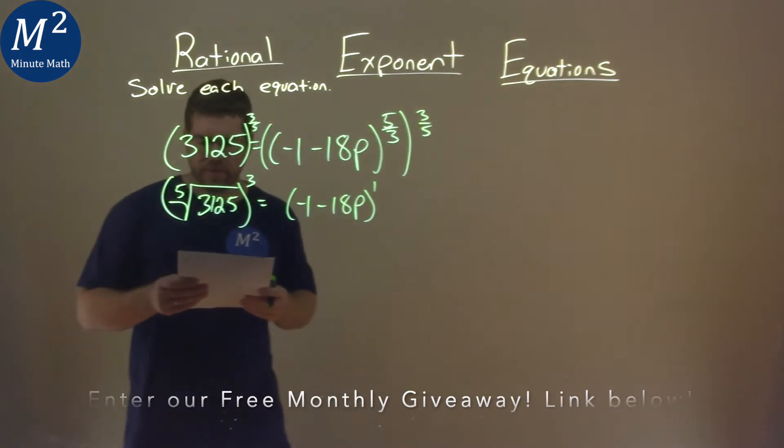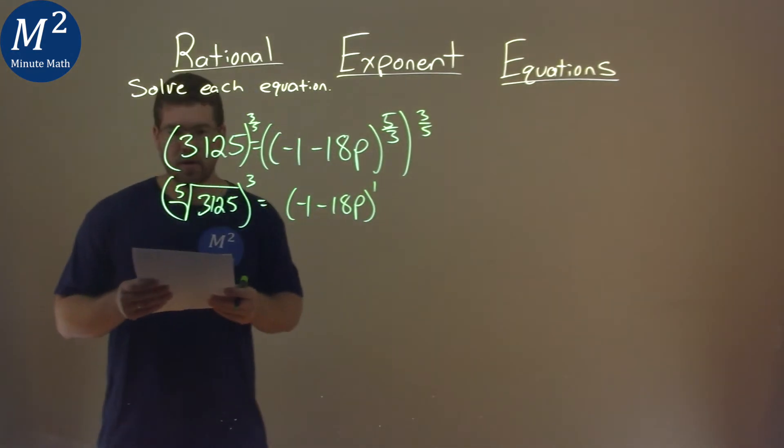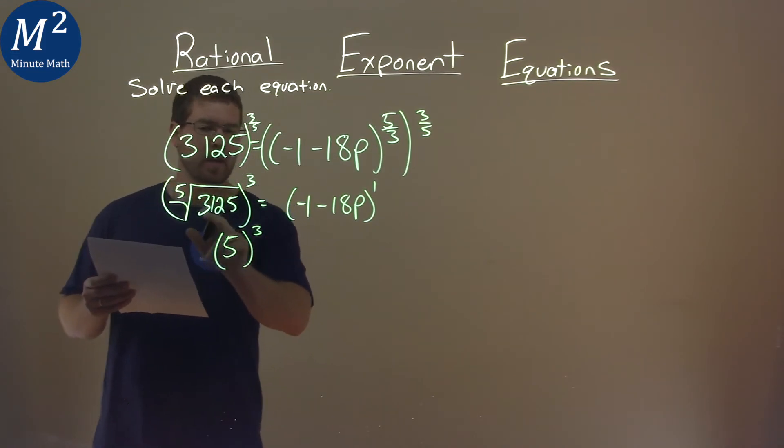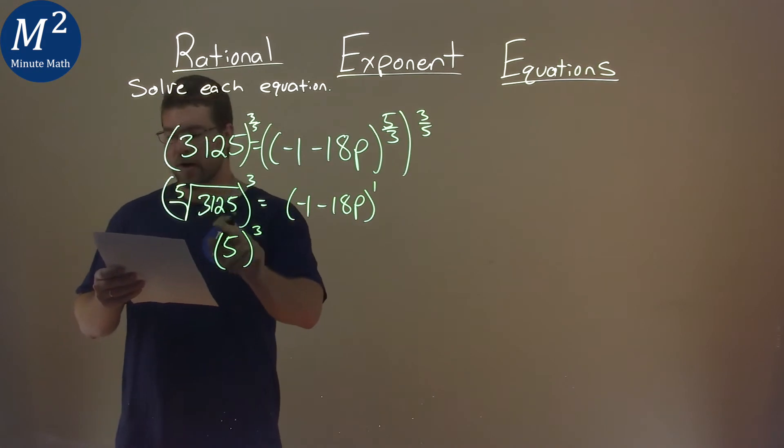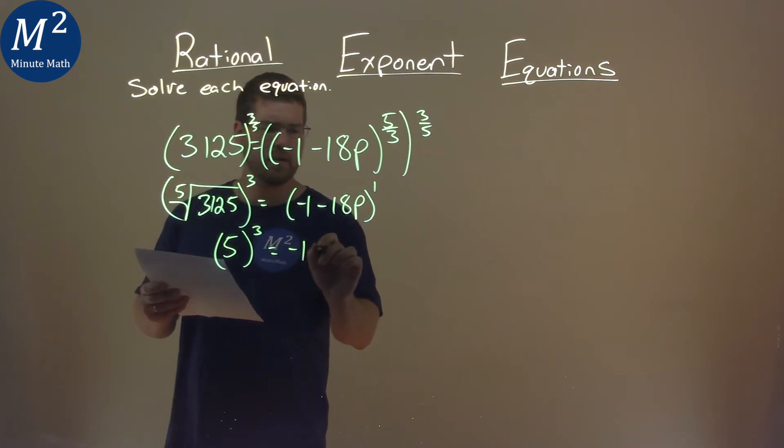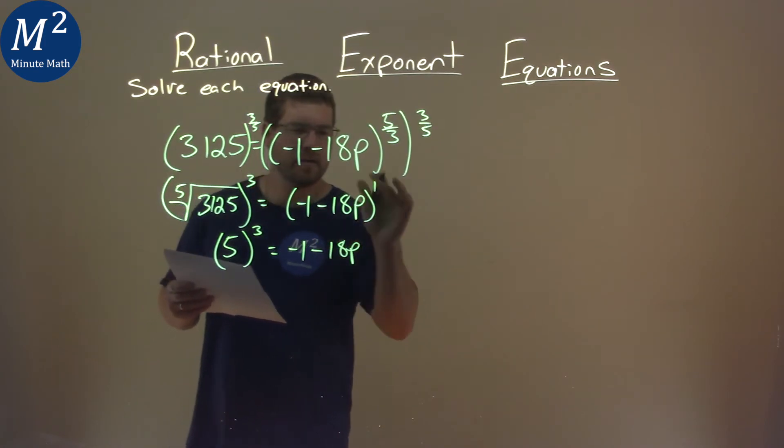Now let's simplify the left-hand side. The fifth root of 3125 is five. We raise that to the third power. So, the fifth root of 3125 comes out to just be five, raised to the third power. The right-hand side is just negative one minus 18p.